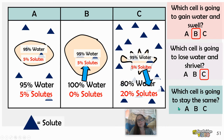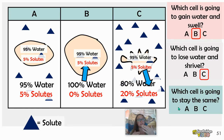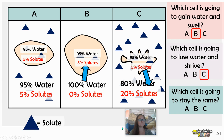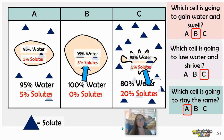Our last question: which one is going to stay the same? Which one is in isotonic conditions where the concentration of water is equal both on the inside and the outside, and therefore water moves in and out at equal rates? That's cell A — 95% water on the inside and 95% water on the outside.